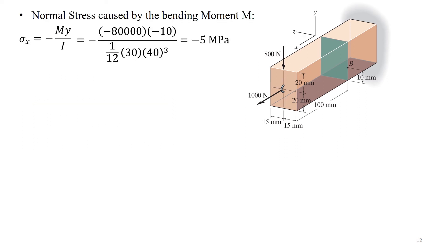Normal stress caused by the bending moment can be calculated using the flexure formula: sigma X equals negative MY over I. Here, Y is the distance of point B from the NA axis, which is 10 mm. Therefore, sigma X equals negative MY over I equals negative 5 MPa.